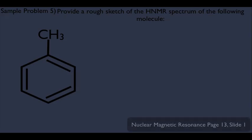So here's sample problem 5. We're going to provide a rough sketch of his HNMR. Remember, the first thing we should do is fill in the hydrogens right here.